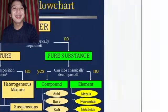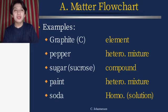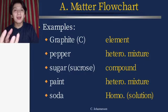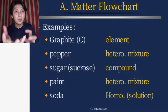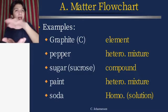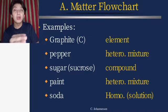In the matter flowchart, here are examples: graphite, which is made up of carbon, is an element. Pepper is a heterogeneous mixture — in Tagalog, that's paminta. Sugar, which is sucrose, is a compound. Paint is a heterogeneous mixture because it has a liquid part and a white liquid on top that you need to mix. Soda is considered homogeneous, which is a solution.